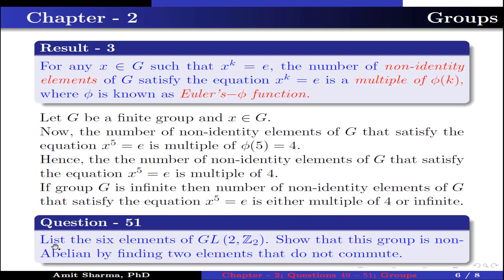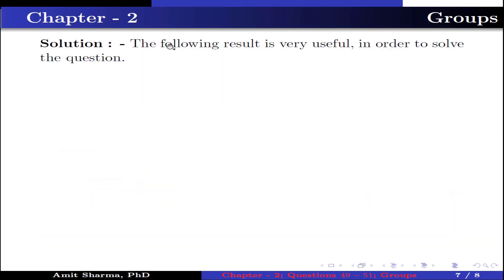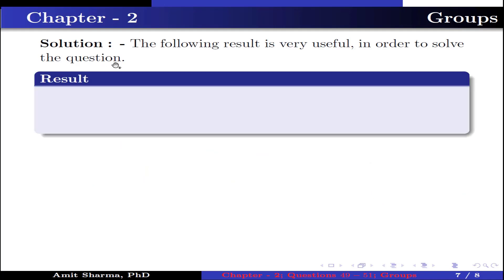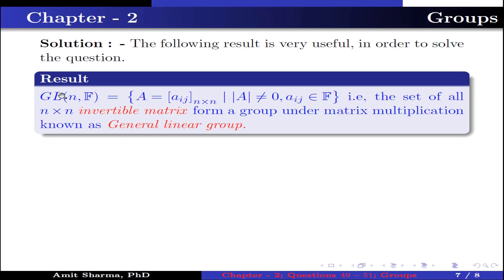Question number 51: List the 6 elements of GL2(Z2) and show that this group is non-abelian by finding two elements that do not commute. The following result is useful: GL(n, F) = {A = [aij] (n×n matrix) : det(A) ≠ 0, aij ∈ F}, that is, the set of all n×n invertible matrices forms a group under matrix multiplication, known as the general linear group.